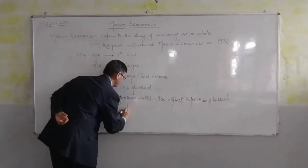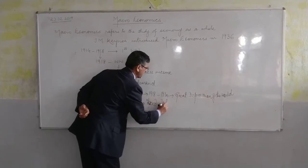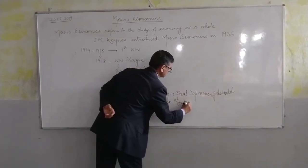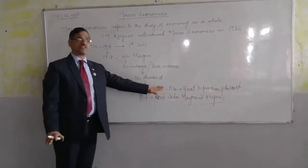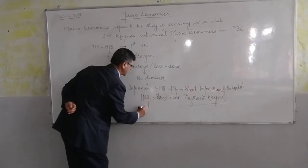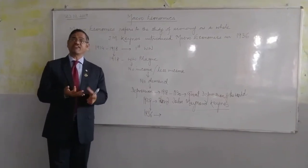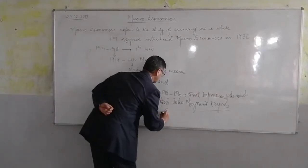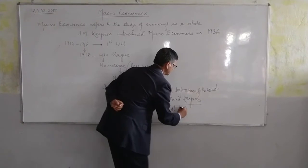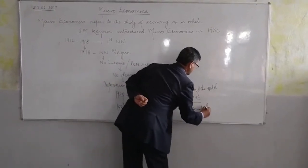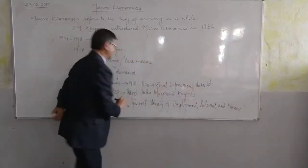So Lord John Maynard Keynes started looking for a solution to this Great Depression. He worked on it and took almost seven years, and in 1936 he came up with a solution in the form of a book called 'The General Theory of Employment, Interest and Money.' With this publication, he came up with a solution.